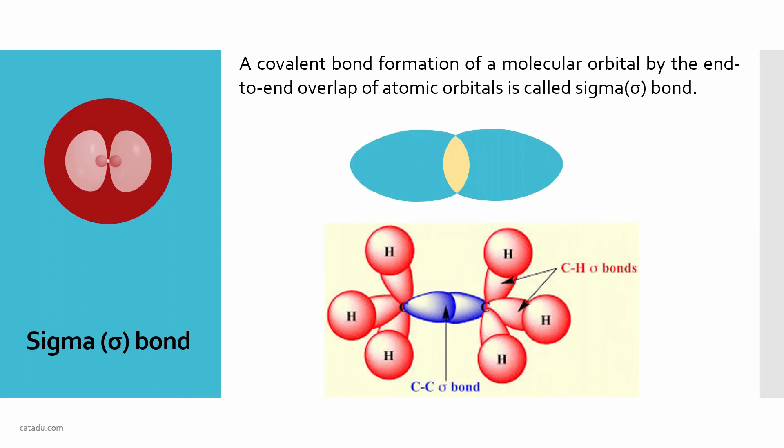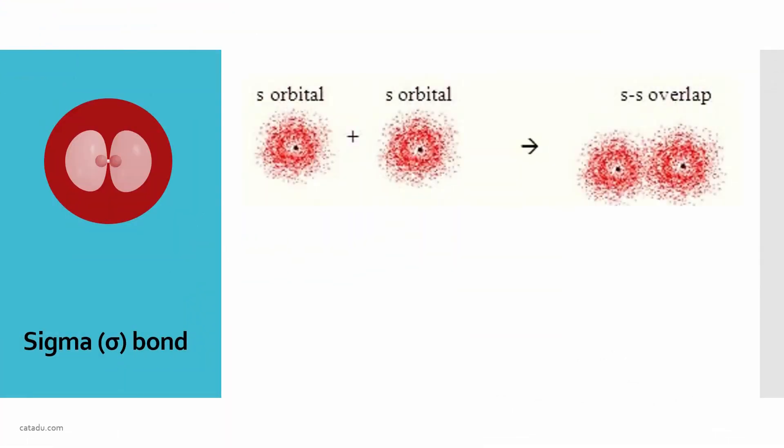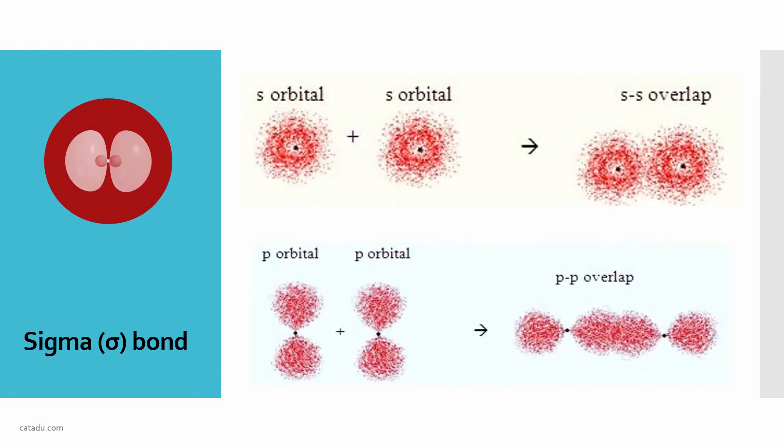The different types of overlapping in sigma bond: this is s-s overlap, it is just like hydrogen-hydrogen single bond, direct overlapping of s orbital and s orbital. Another one is p-p overlap.